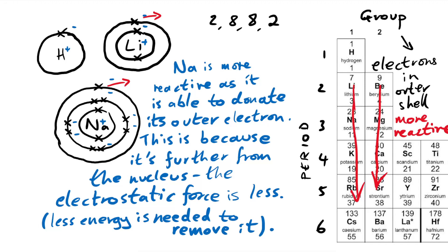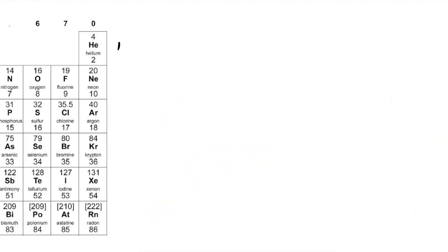Let's look at the other side - let's look at groups six and seven. So let's look at group seven - we call them the halogens: fluorine, chlorine, bromine, iodine, and maybe astatine as well, but usually we look at the first four. Let's draw fluorine.